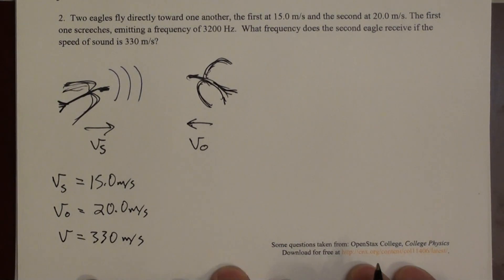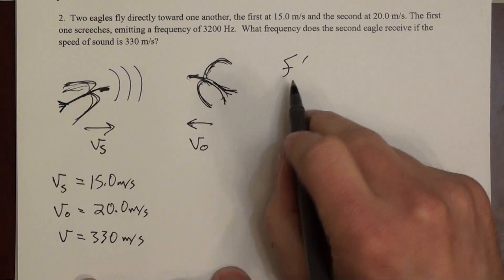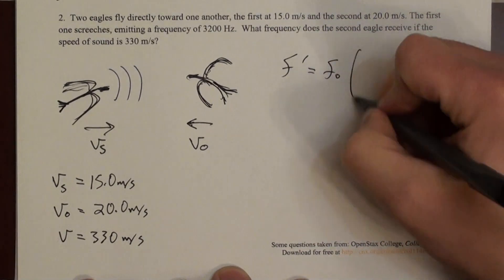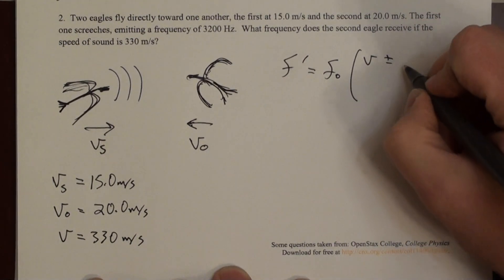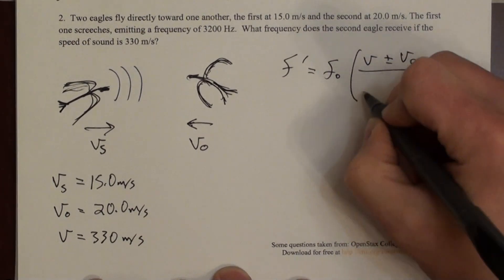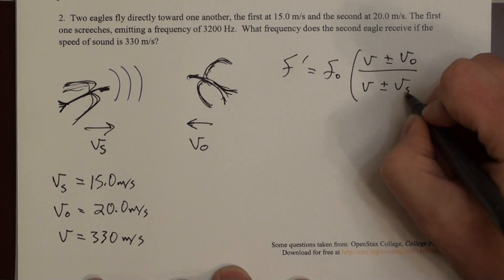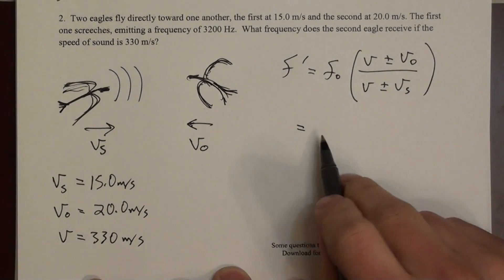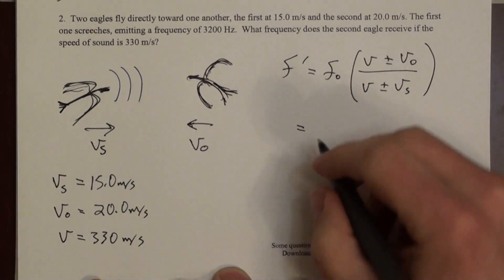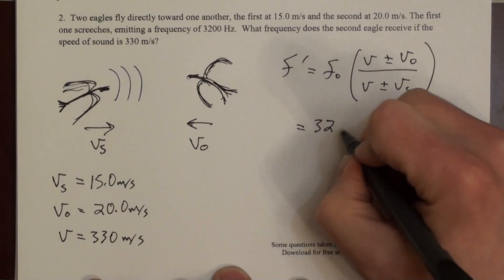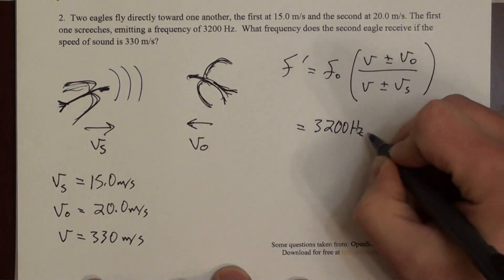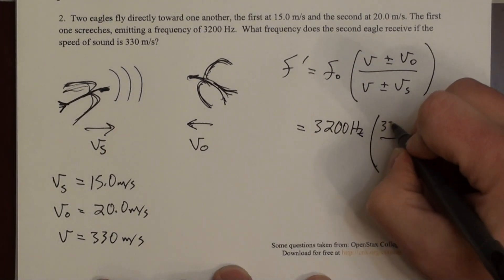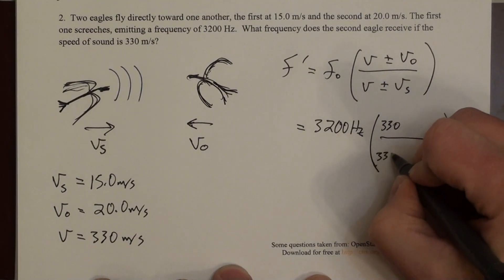So we're just going to plug in our equation. The observed frequency is f_0 times v plus or minus v_o over v plus or minus v_s. So plugging in here, the frequency emitted by the first eagle is 3200 hertz. And then we're going to fill in this fraction. So the speed of sound was 330. So we'll put that in for the unsubscripted v.